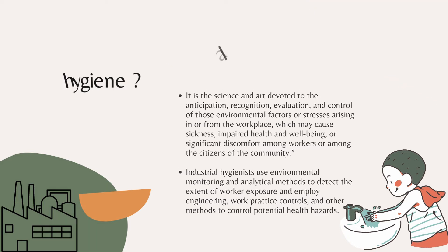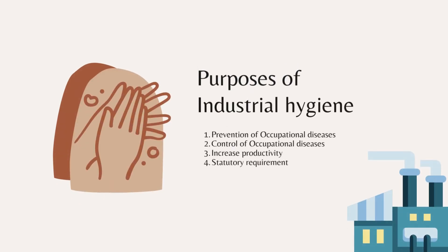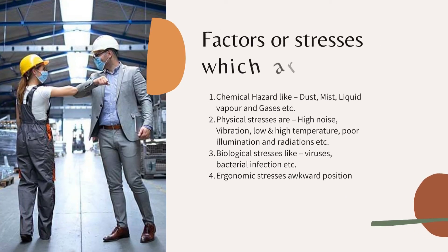Moving towards the purposes of industrial hygiene — the purposes are: prevention of occupational diseases, control of occupational diseases, increased productivity, and statutory requirements. Industrial hygiene is of great importance to prevent or control occupational diseases, increase the productivity of persons working in the industry, and to fulfill statutory requirements, meaning following laws passed by state or central governments.